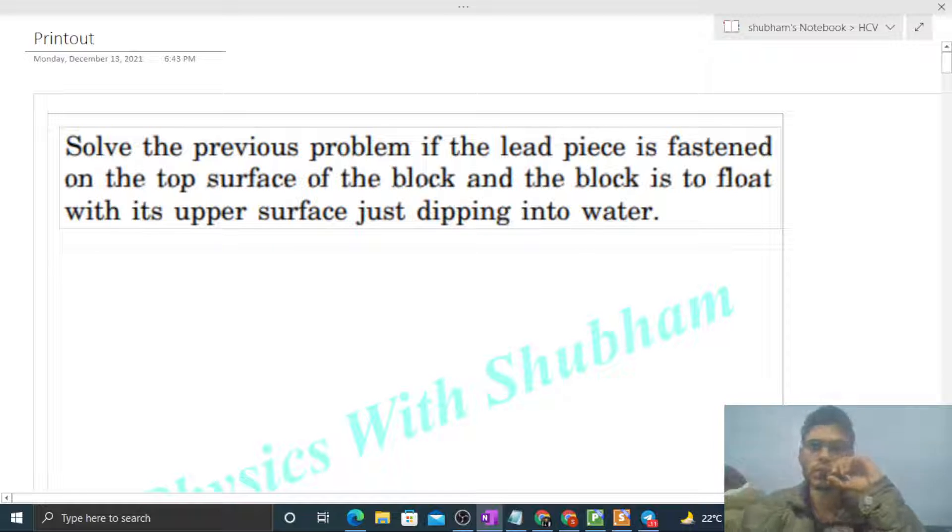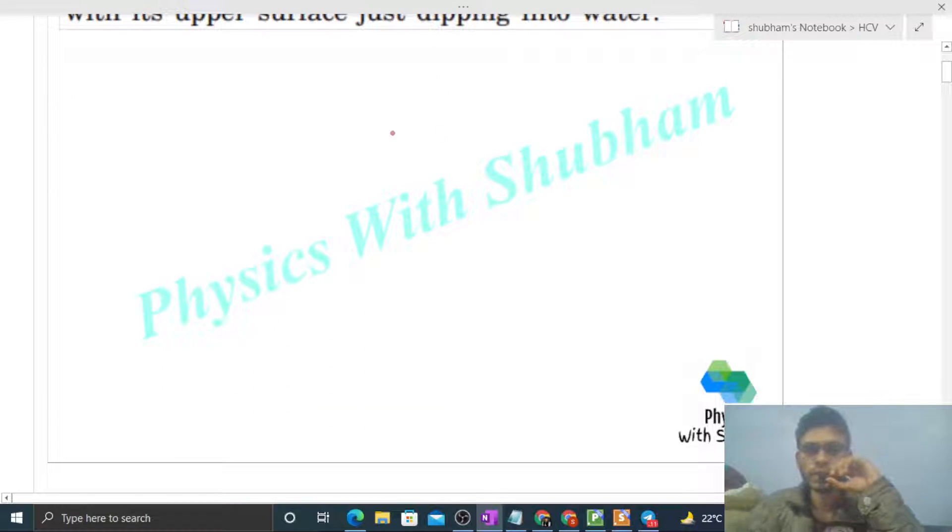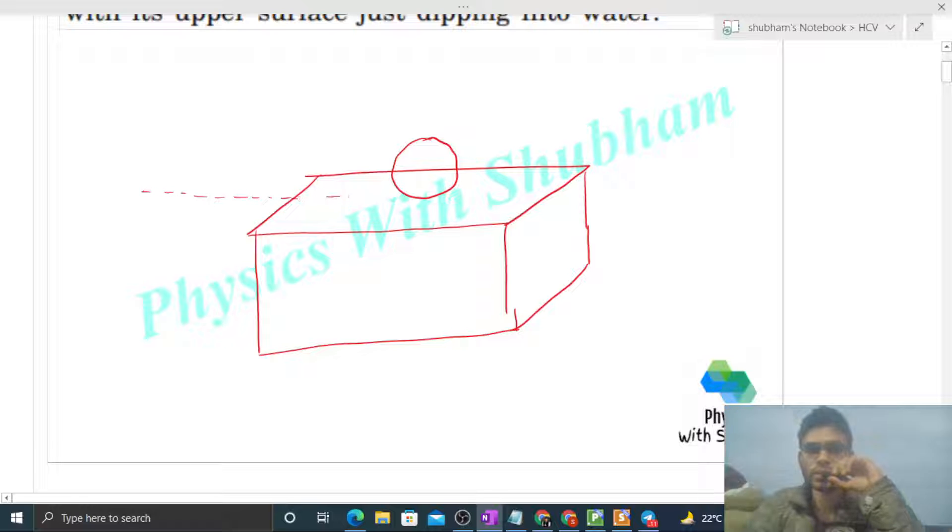So in this case, we have a cube, right, a wooden cube. And this time we put lead on top, something like this, and this system floats in such a way that the top surface of this cube is just below the water.